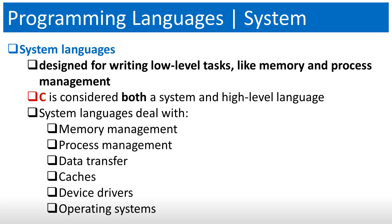The next type is system languages. These are designed for writing low-level tasks like memory and process management. C is considered both a system and a high-level language. System languages allow you to deal with memory management, process management, data transfer, caching, device drivers, and even operating system-level tasks like writing the kernel. C was actually originally invented so that most of the Unix operating system could be rewritten in C.